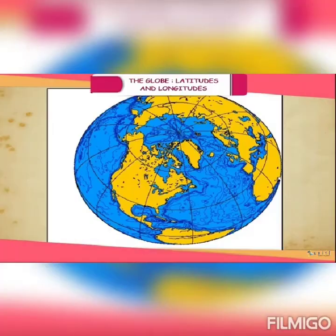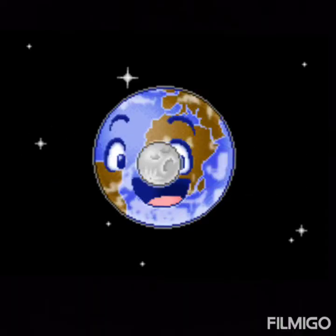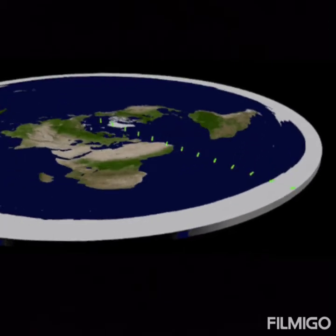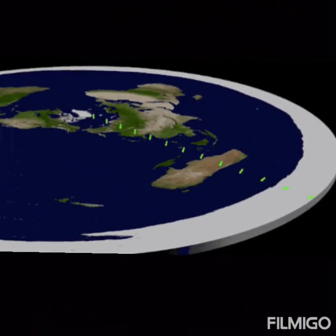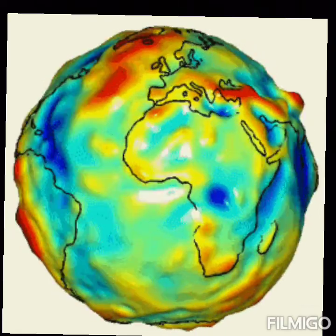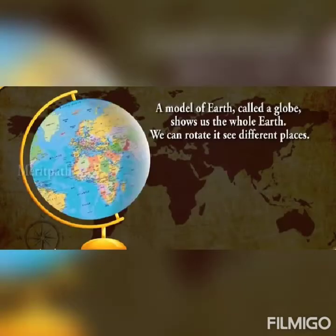Now let's begin with the chapter. Earth is a fascinating place to live in, and to know it better we need to find a true representation of it. Our earth is neither round nor a perfect sphere — it is slightly flattened at the top and at the bottom. This shape is known as a geoid, which is the true shape of the earth. A globe is a small model of the earth.